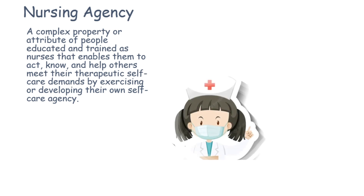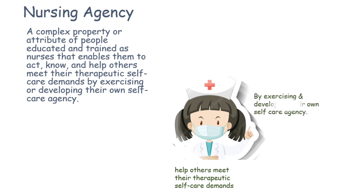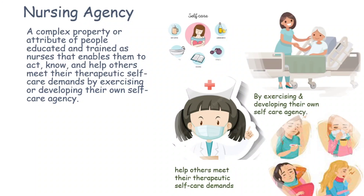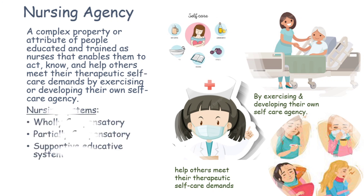Nursing agency involves helping others meet their therapeutic self-care demands by exercising or developing their own self-care agency. People have their own ability to take self-care, but that is somehow affected, so nurses further develop that with their assistance. That is called nursing agency. There are three types of nursing systems through which nurses assist: wholly compensatory, partially compensatory, and supportive educative.